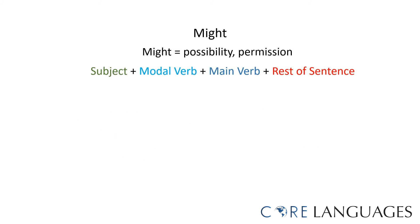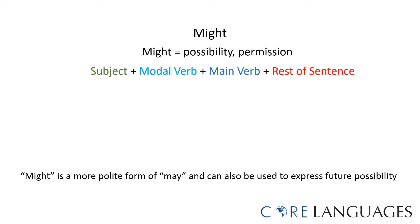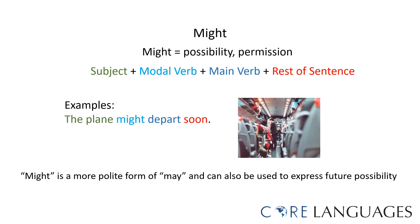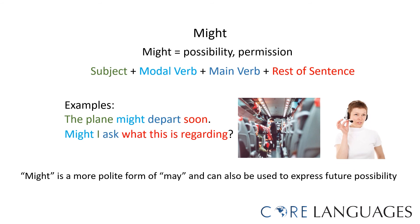The modal verb 'might' is also used to express possibility or permission, but it is also considered the more polite form of 'may', and it can be used to express future possibility. For example, the plane might depart soon. Or, might I ask what this is regarding?